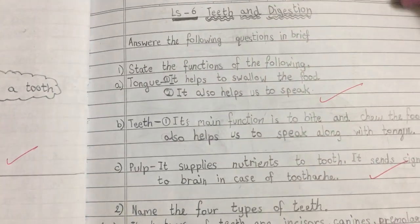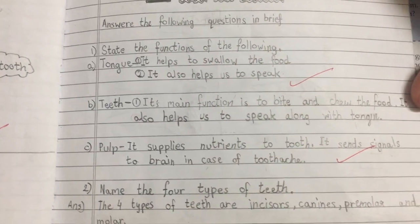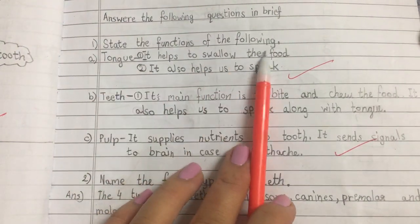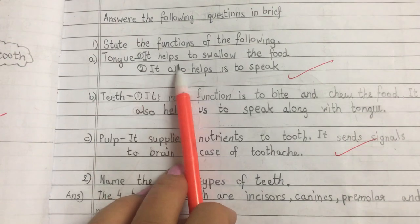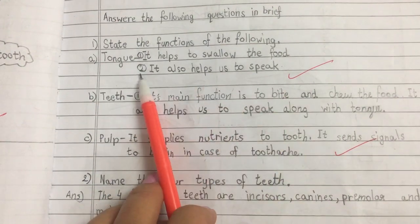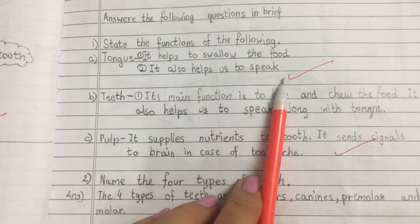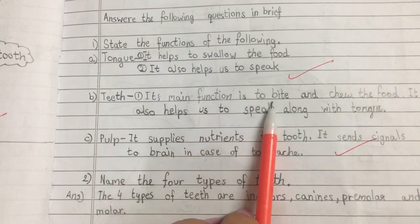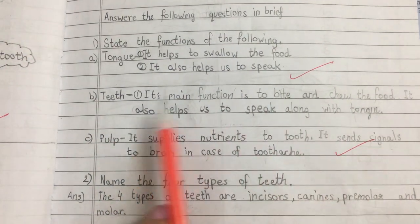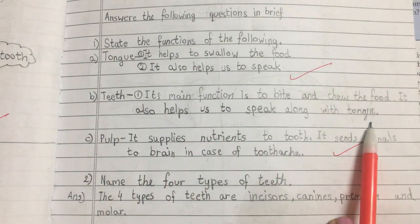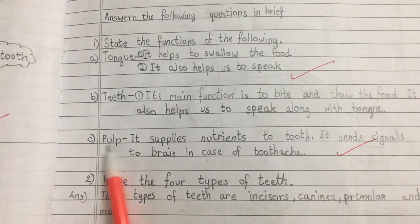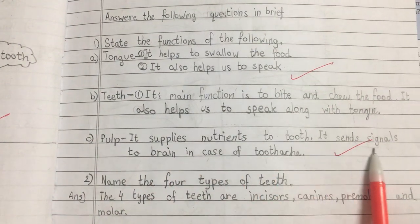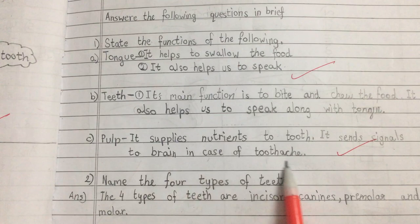Answer the following questions in brief. 1) State the functions of the following: Tongue — it helps to swallow the food and also helps us to speak. Teeth — the main function is to bite and chew the food; it also helps us to speak along with the tongue. Pulp — it supplies nutrients to the tooth and sends signals to the brain in case of toothache.